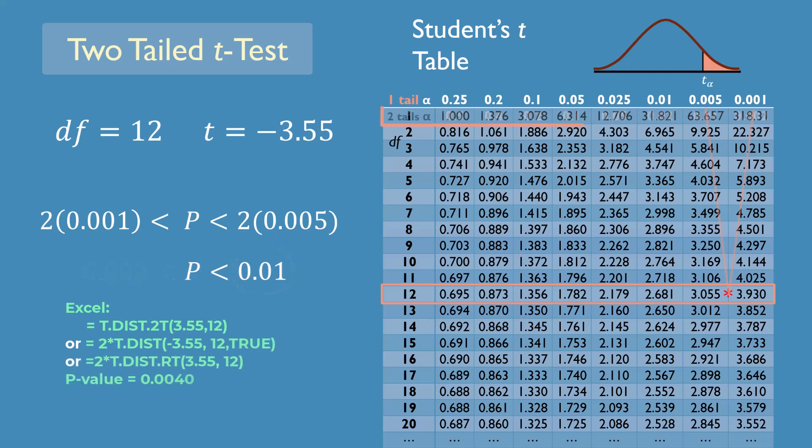Note that some tables have two-tailed alpha values which can also be used to read the two-tailed p-values directly. And that's it for this video. Thanks for watching.